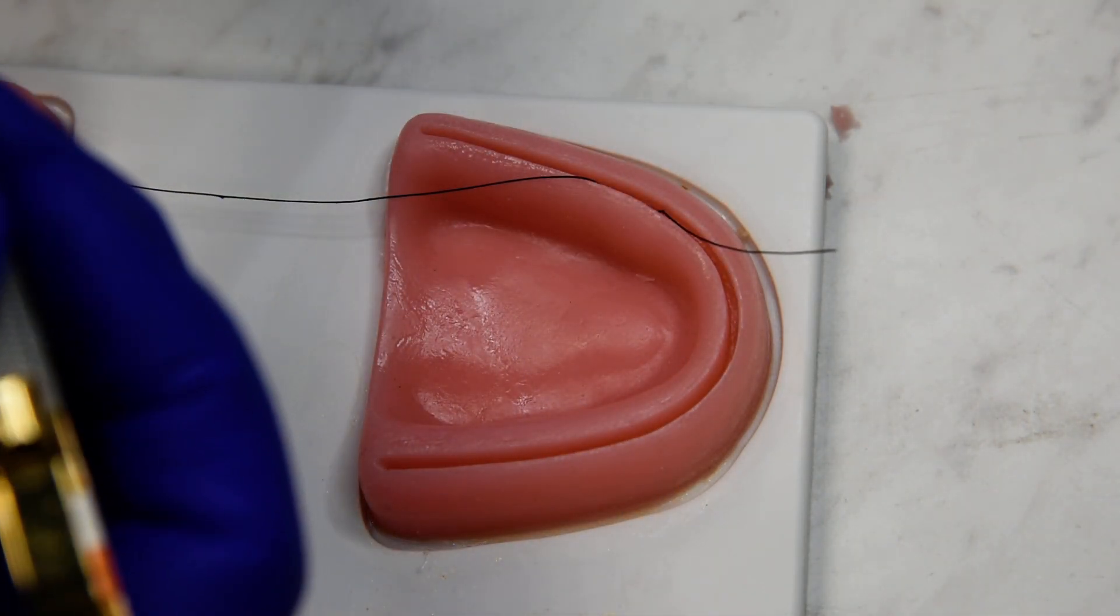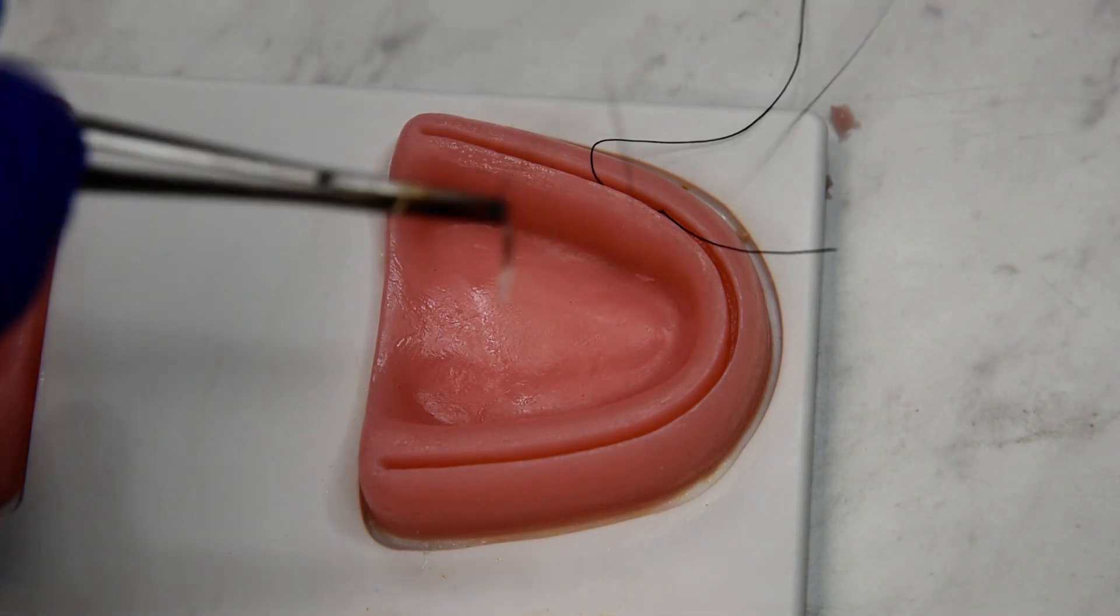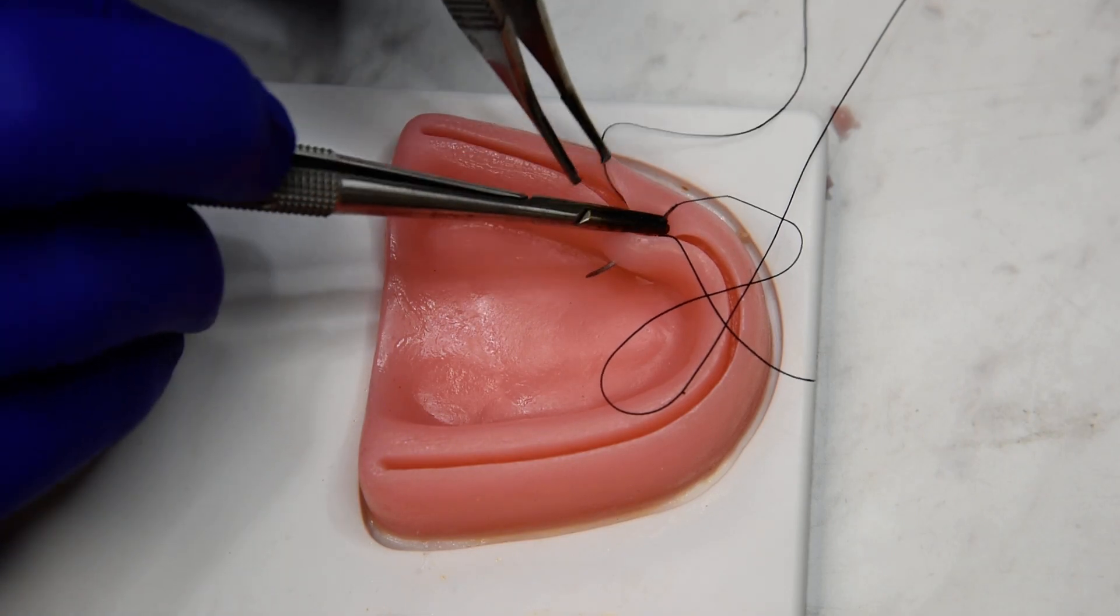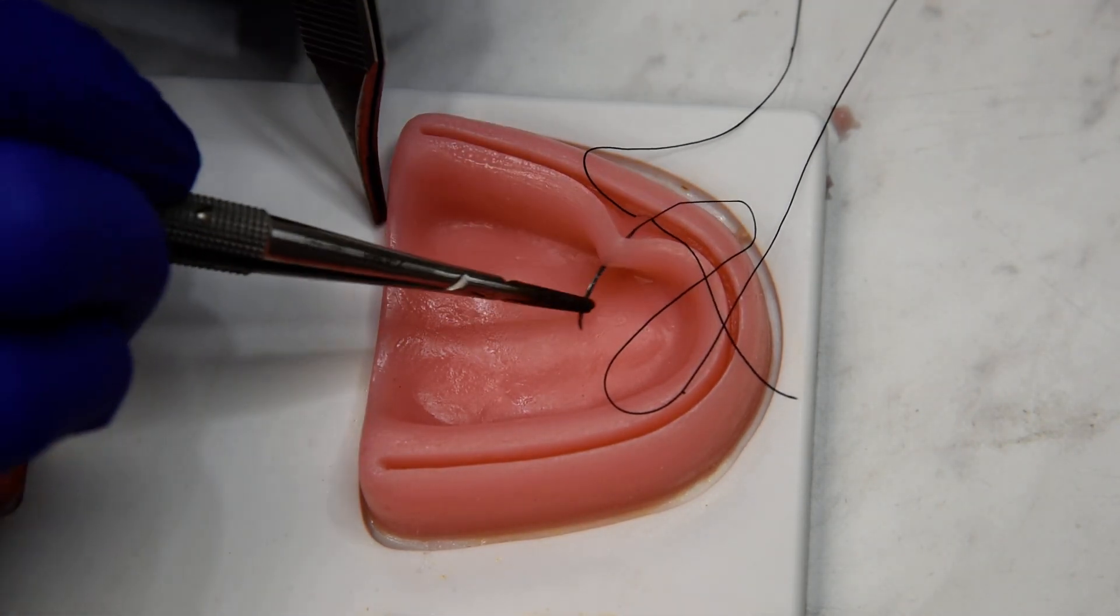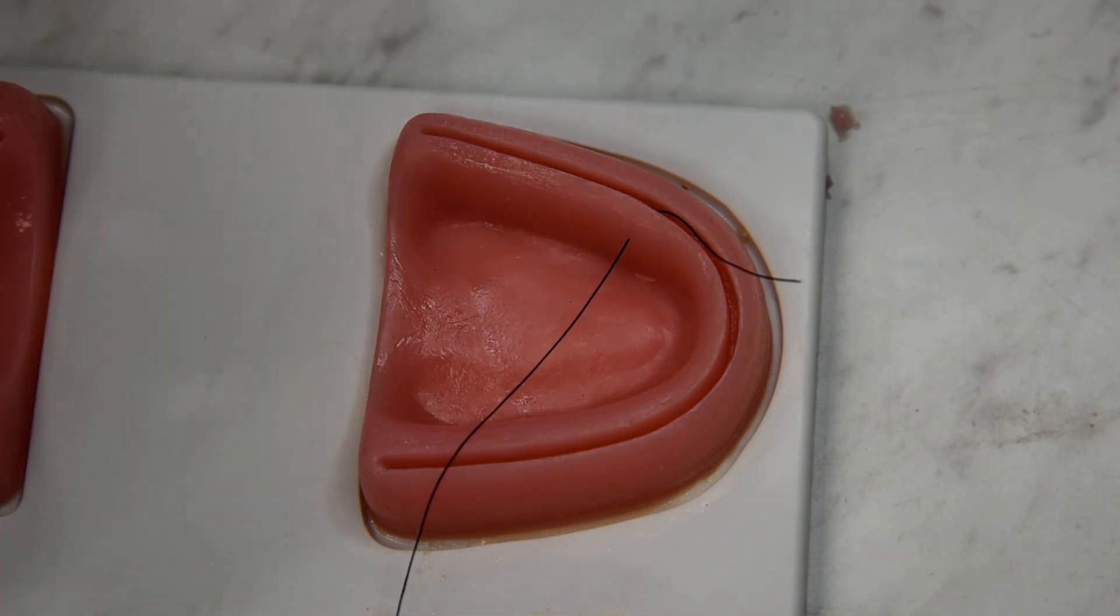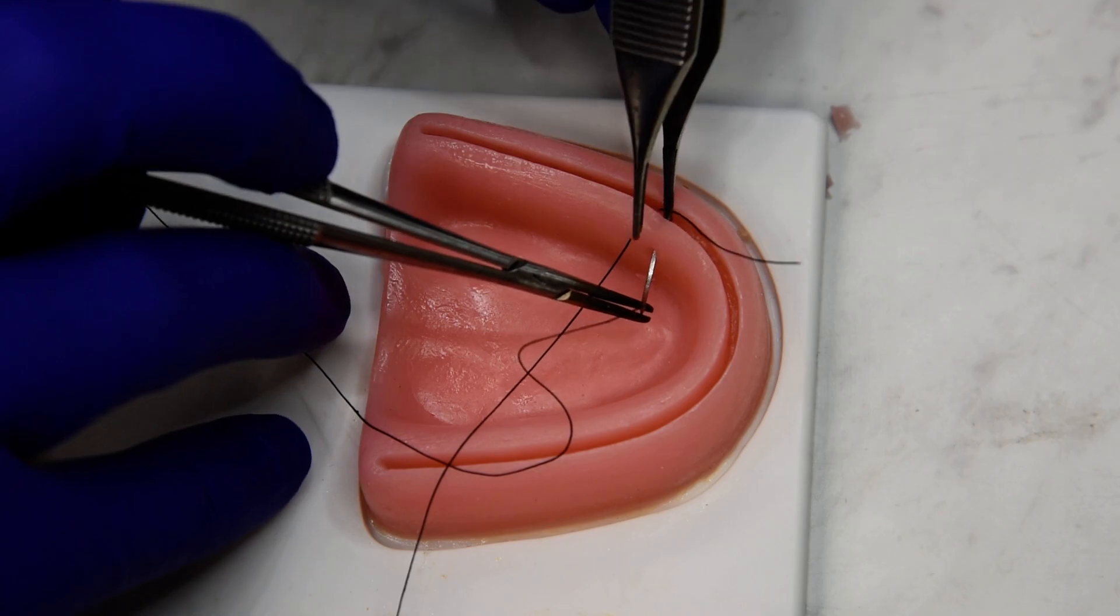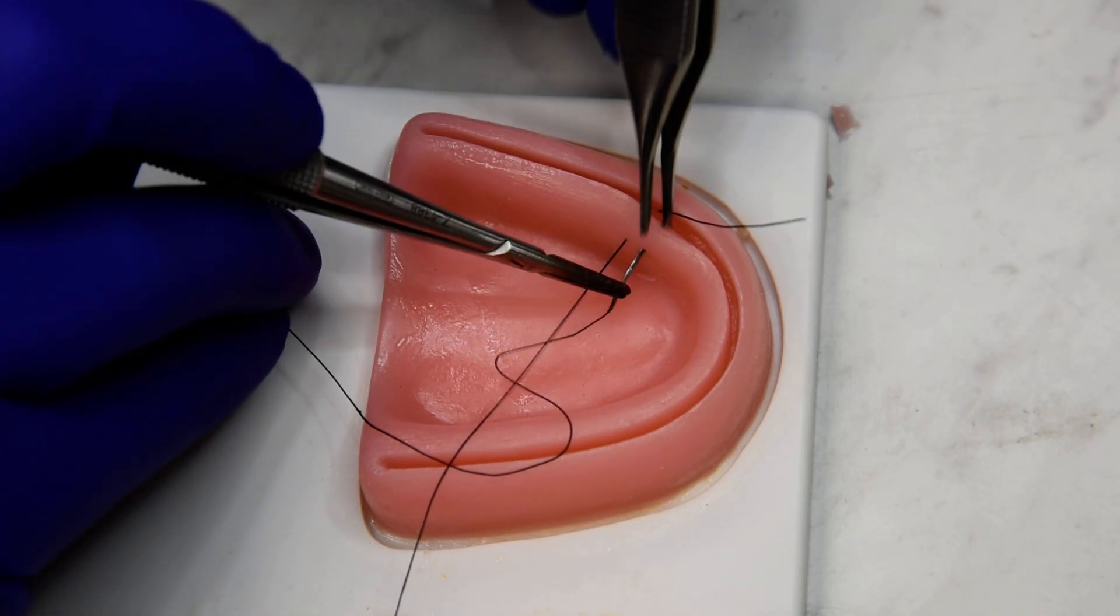And then the next bite is in and back out and back into the palate. So here we're taking a bite out of the lingual, and back in. So we're going to have a loop similar to a mattress on the lingual.